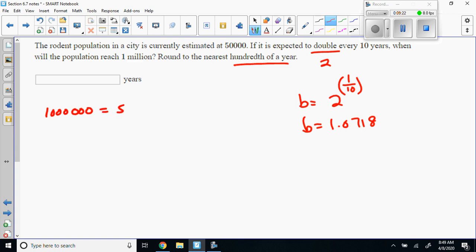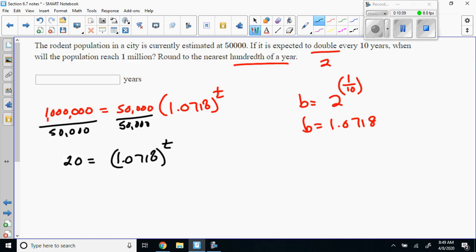You get a base of 1.0718. Now you set up: there's a million and we're starting out with 50,000 rodents, so 1,000,000 equals 50,000 times 1.0718 raised to the t. We need to find out how long it's going to take. First thing we'll do is divide both sides by 50,000.